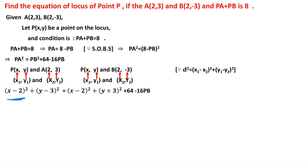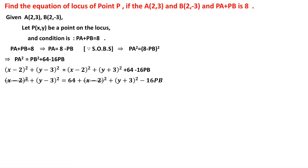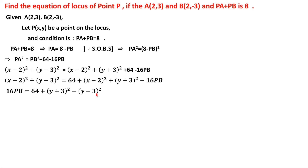The (x - 2)² terms cancel from both sides. This gives (y - 3)² = 64 + (y + 3)² - 16·PB. Rearranging, transposing 16·PB to the left and (y - 3)² to the right: 16·PB = 64 + (y + 3)² - (y - 3)². This is in the form (a + b)² - (a - b)².